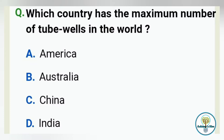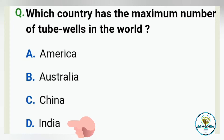Question number one. Which country has the maximum number of tube wells in the world? Option A: America. Option B: Australia. Option C: China. And option D: India. And the correct answer is option D, India.